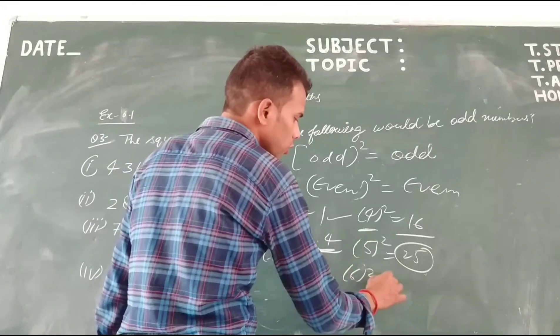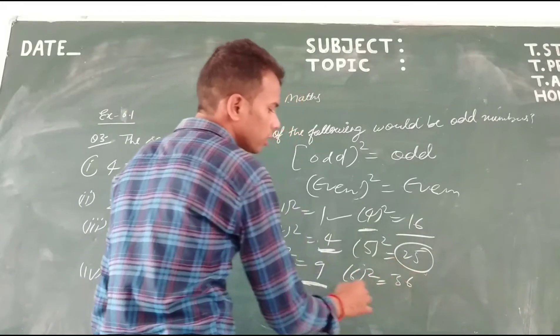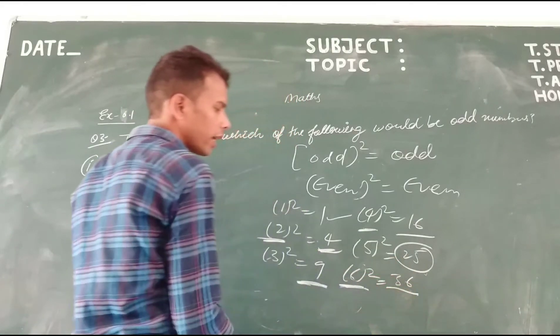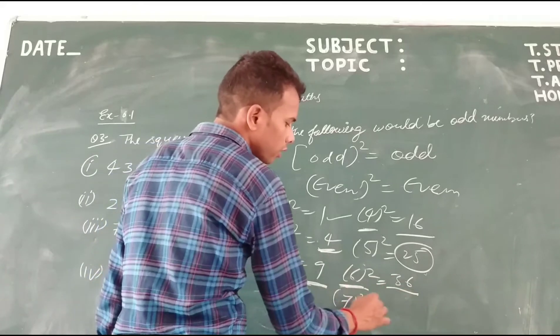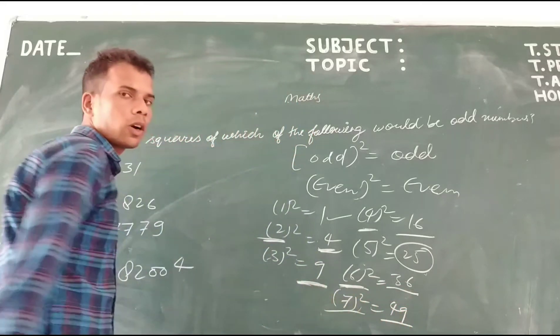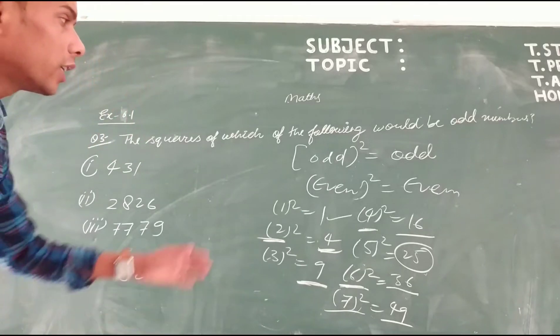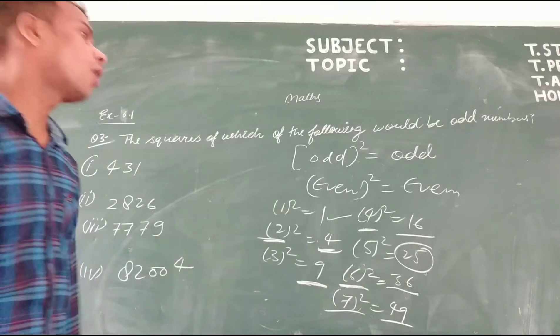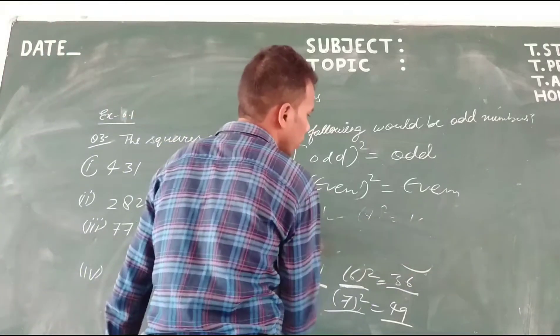6 squared is 36, 6 is even. 7 squared is 49, which is odd, 7 is odd. In this way we can say square of odd is always odd, square of even is always even.